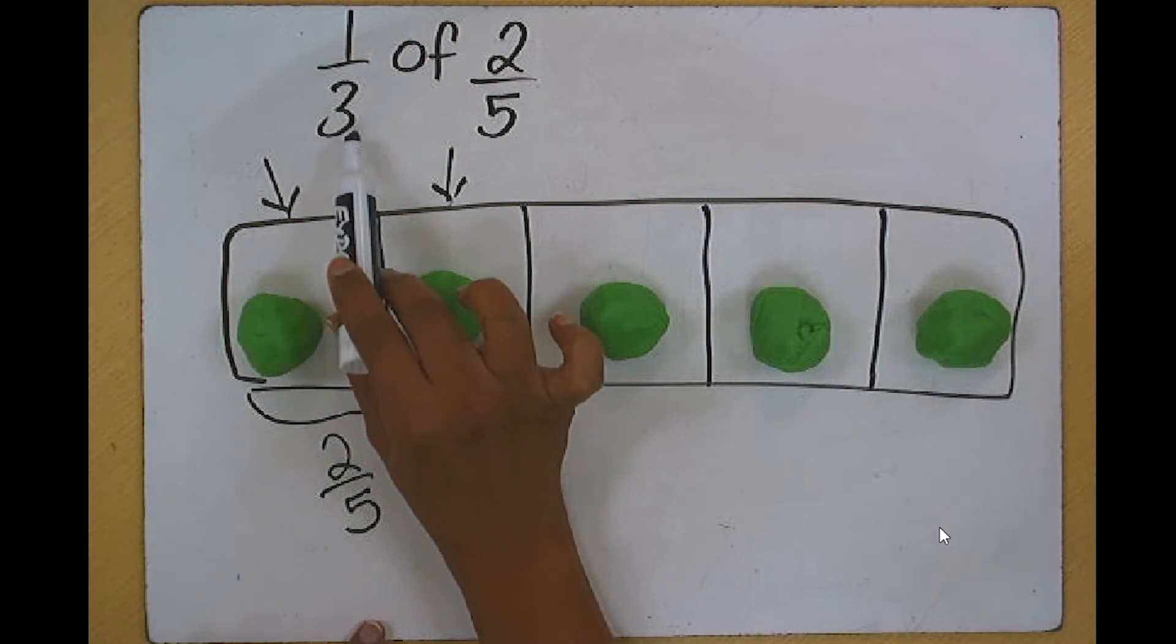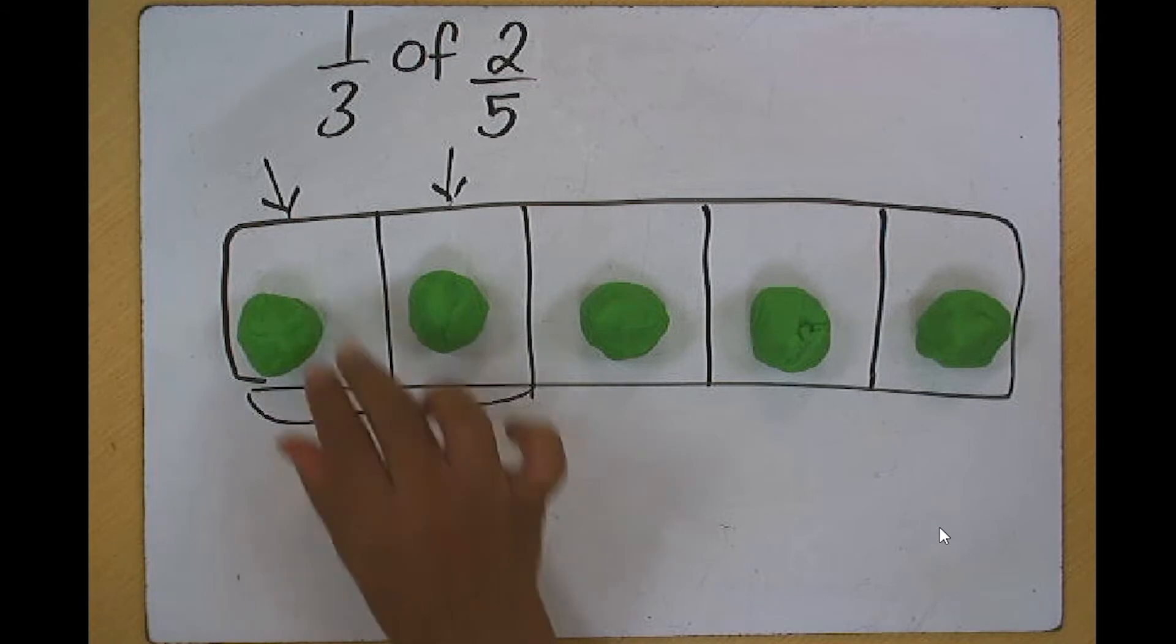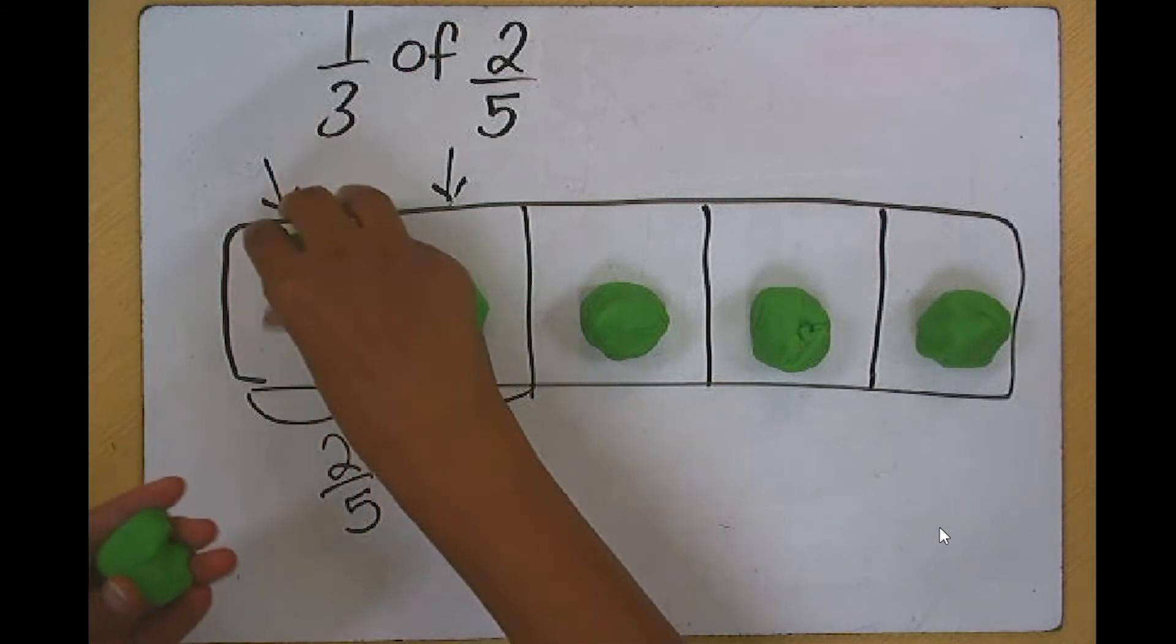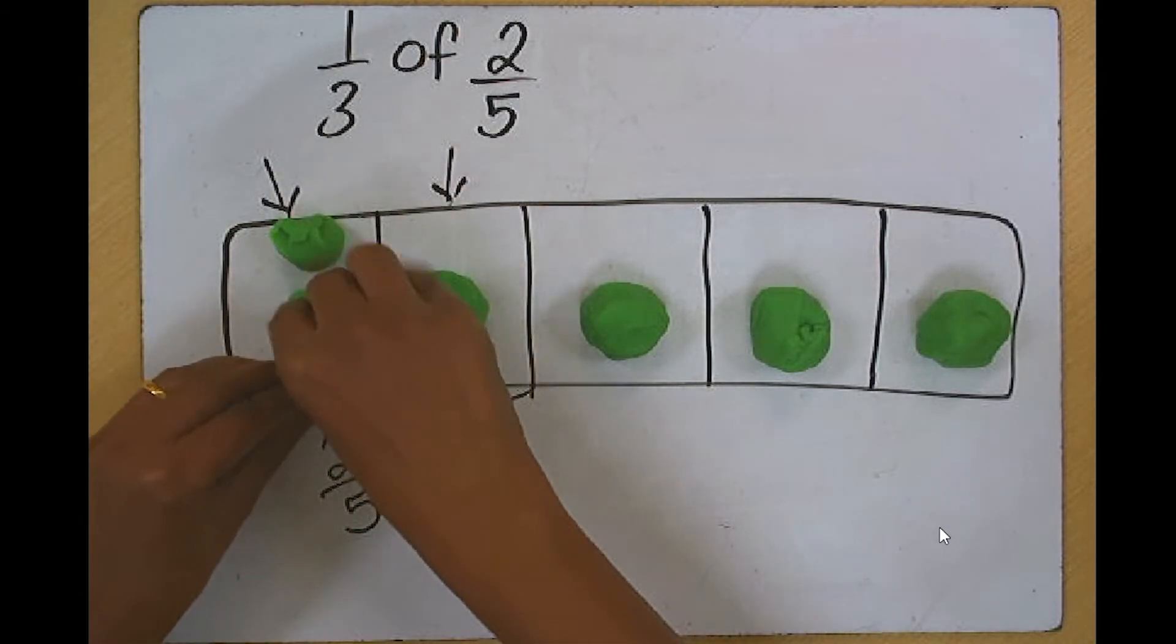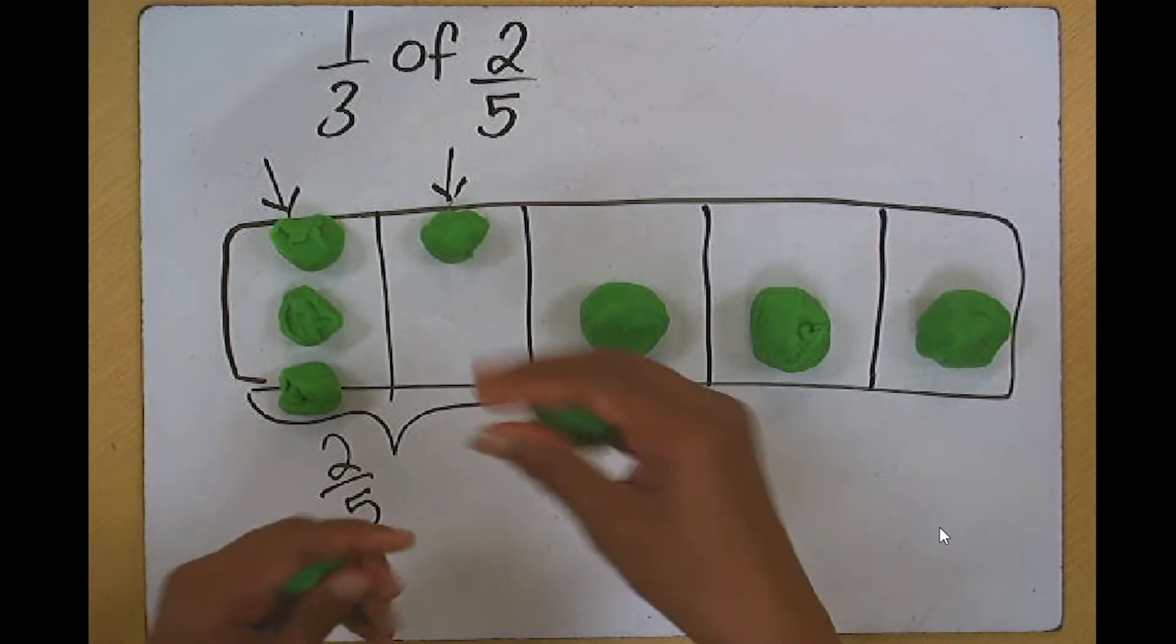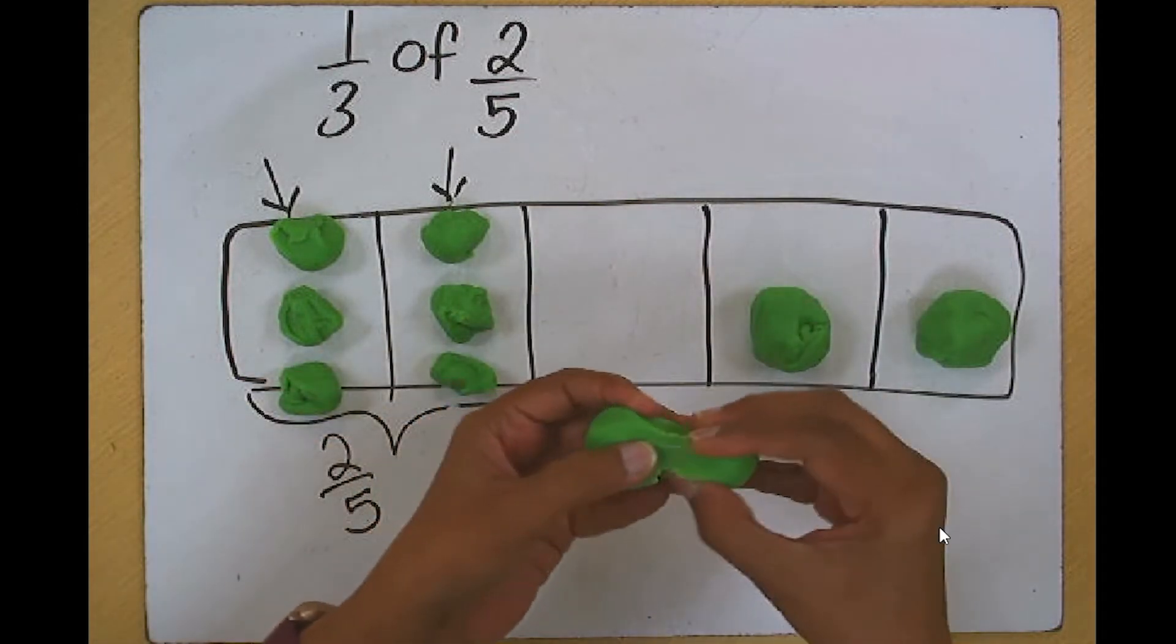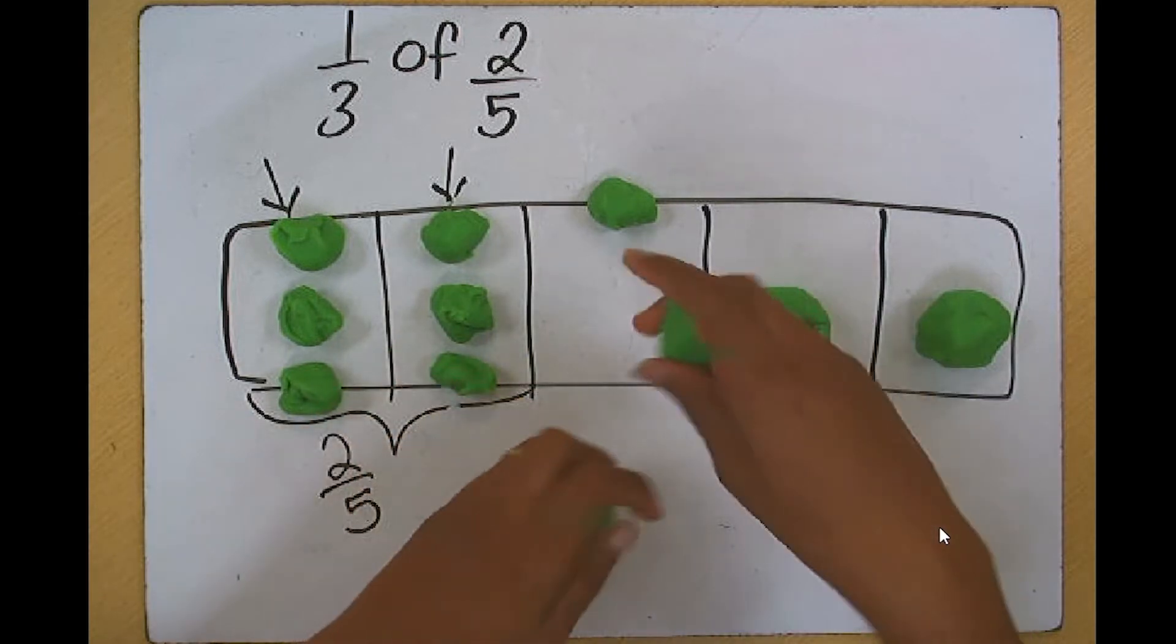We need to find one-third of two-fifths. Let's go with the first one-fifth and divide them into three equal parts. Doing the same for the second. Each one is a third. We extend the same to all the other Play-Doh that we have.